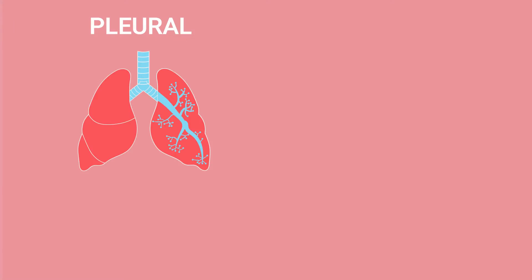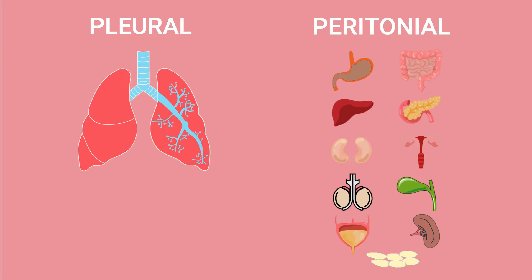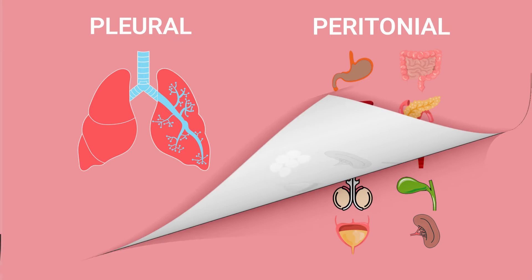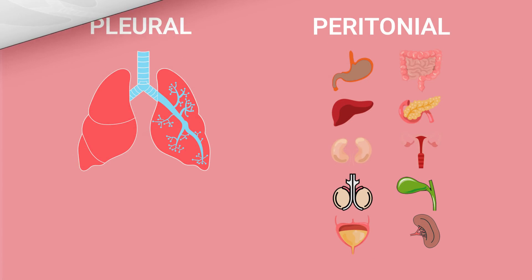The pleuroperitoneal cavity occupies most of the trunk of the amphibian. This holds the lungs, esophagus, stomach, small and large intestines, liver, pancreas, kidneys, ovary, oviduct, testis, gallbladder, urinary bladder, spleen, and fat bodies. Lining all these visceral organs is a fragile epithelium called the peritoneum.